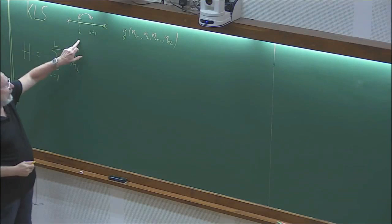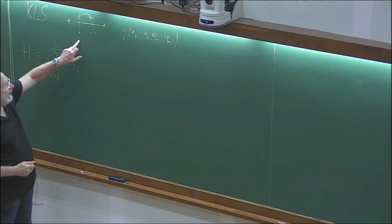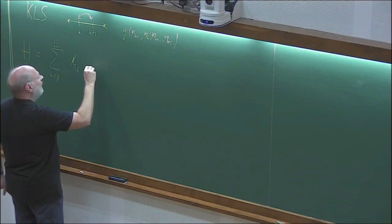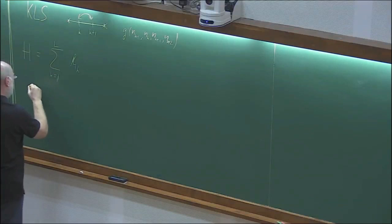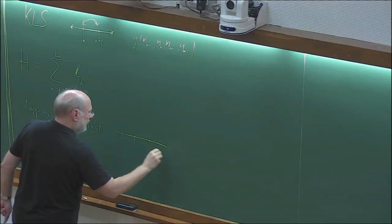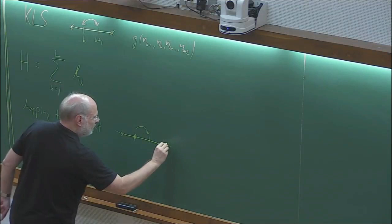This H_K will depend not only on K but on all neighboring sites. How do we construct this matrix? We have the rates. Let's look at the part for hopping to the right: we have a particle here, a vacancy there, and then some dependence on what you have at the neighboring sites.